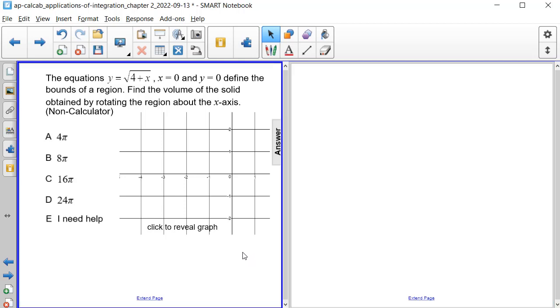The equations y equals the square root of the quantity 4 plus x, x equals 0, and y equals 0 define the bounds of a region. Find the volume of the solid obtained by rotating the region about the x-axis. Notice it says without a calculator.